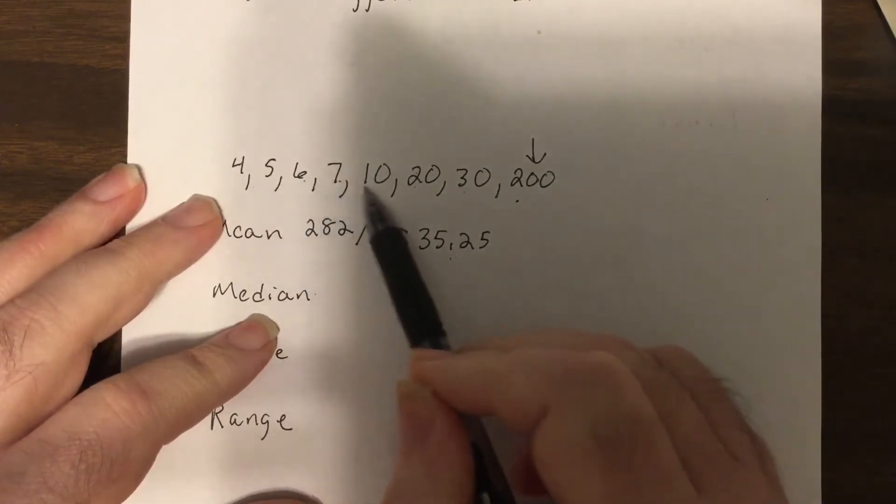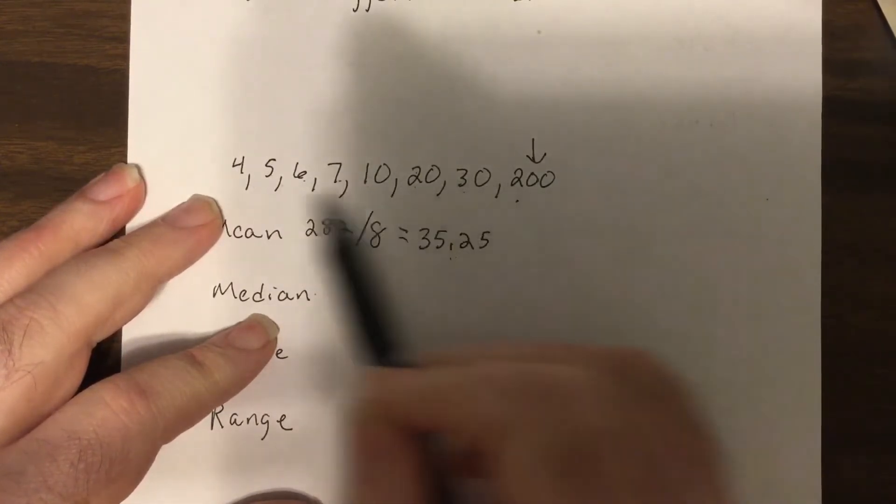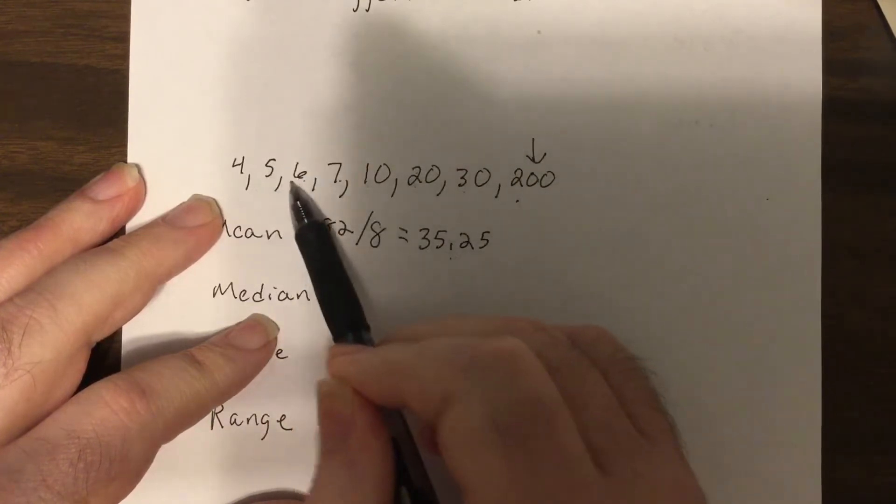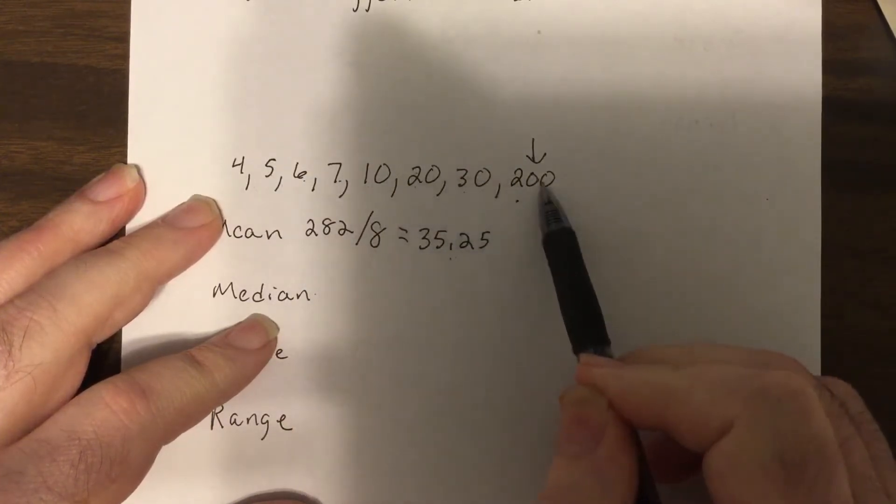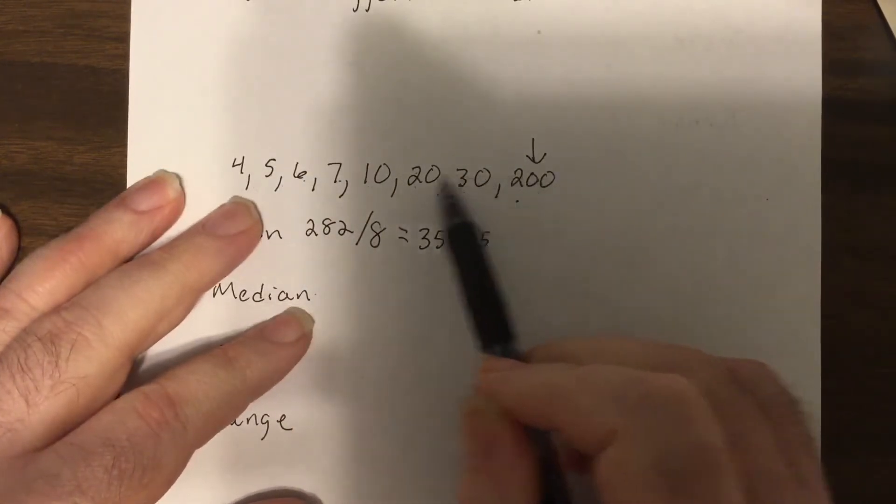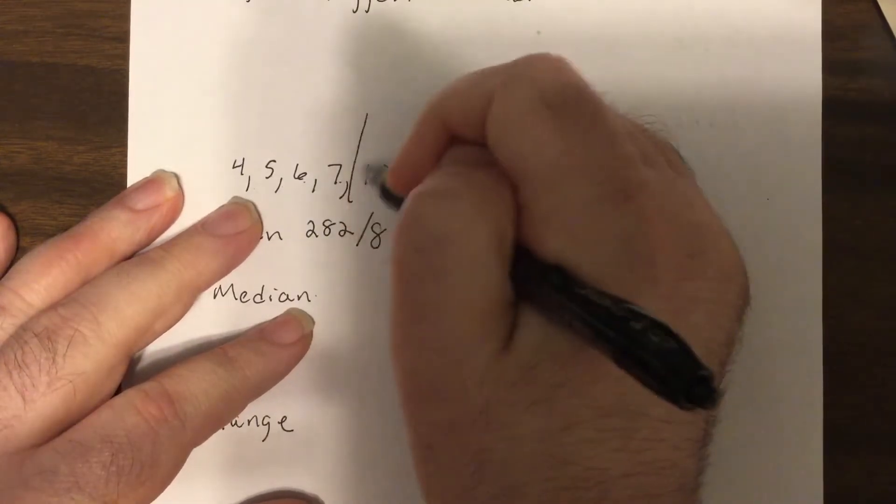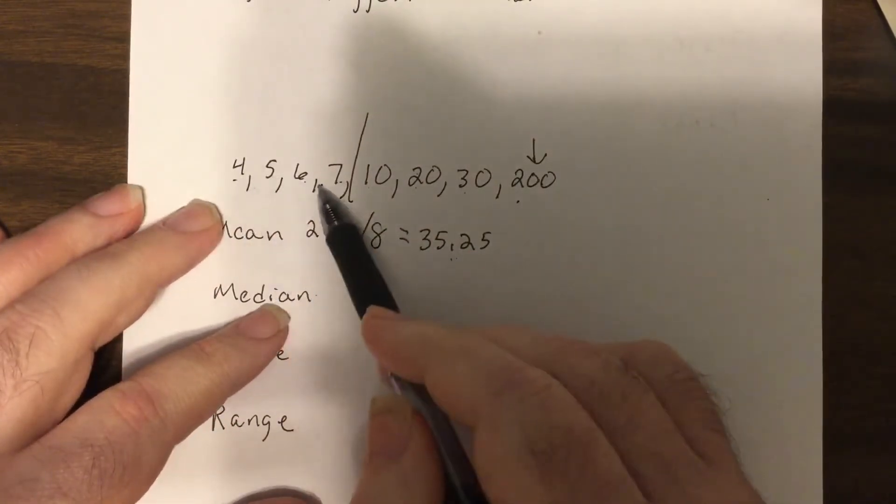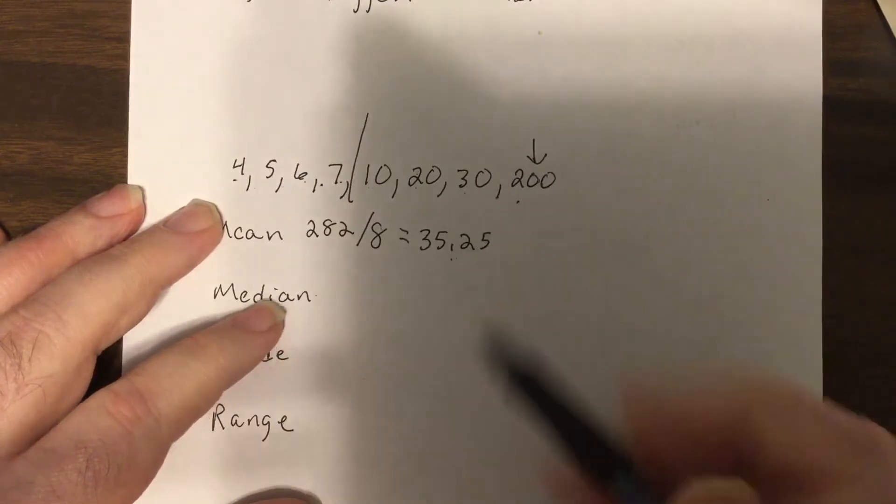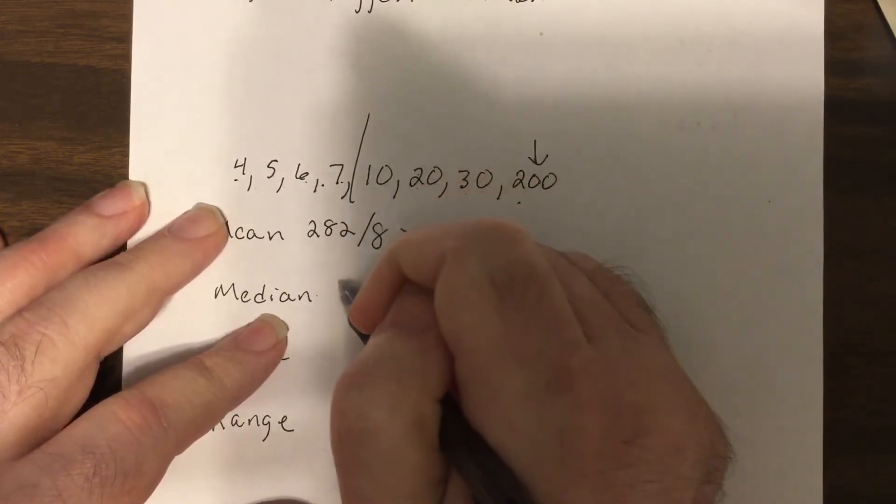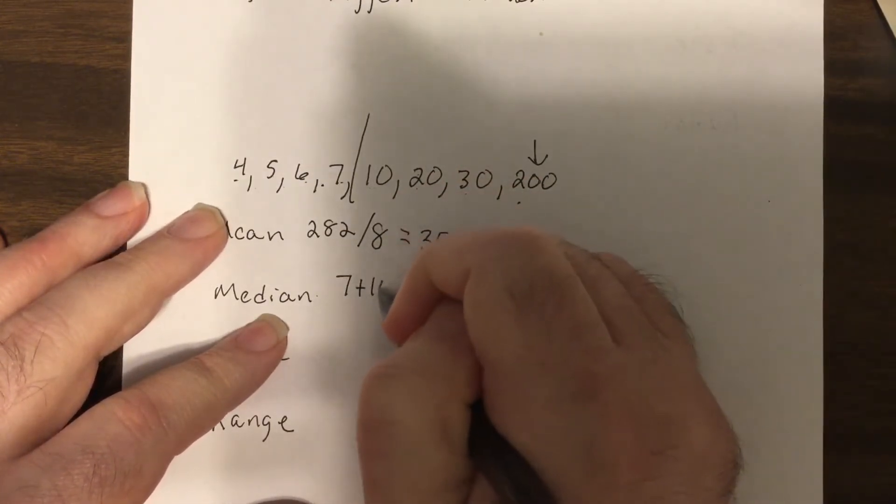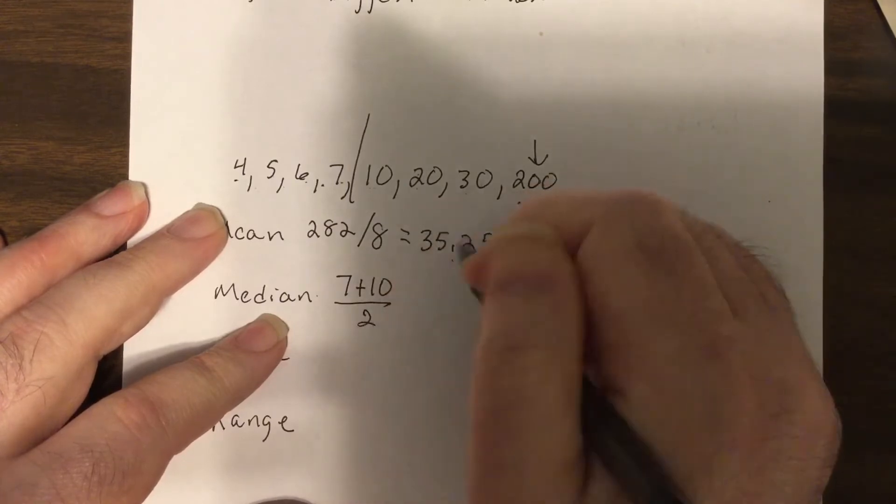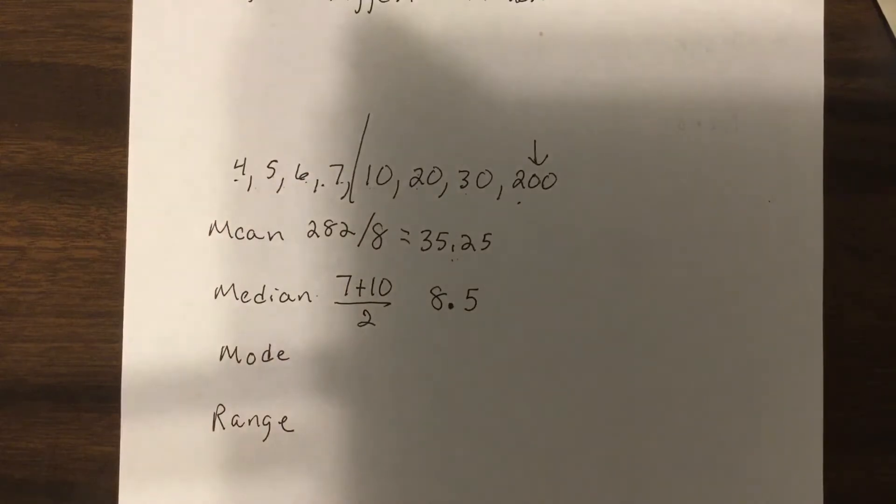The median says the one in the middle. So it's already written smallest to largest. There's 1, 2, 3, 4, 5, 6, 7, 8 numbers. So 1, 2, 3, 4 would be your middle, 4 below, 4 above. So you could do this different ways but one way is 7 plus 10 divided by 2, which is 8.5, 17 divided by 2.